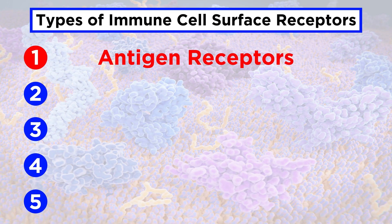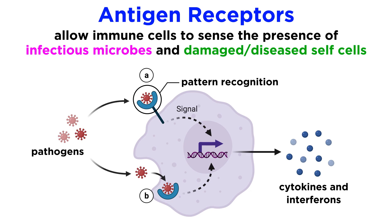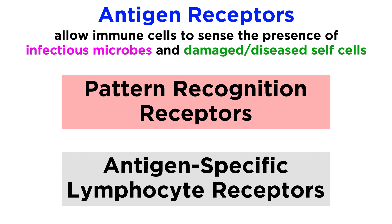The first category is antigen receptors. Antigen receptors allow immune cells to sense the presence of infectious microbes, as well as damaged or diseased self-cells. There are two main types: pattern recognition receptors, and antigen-specific lymphocyte receptors.